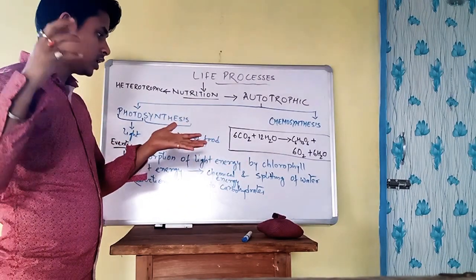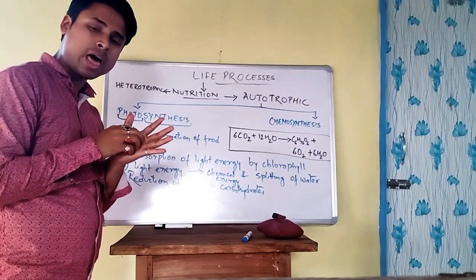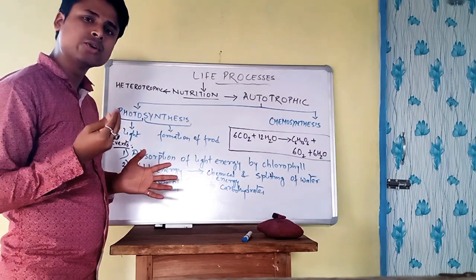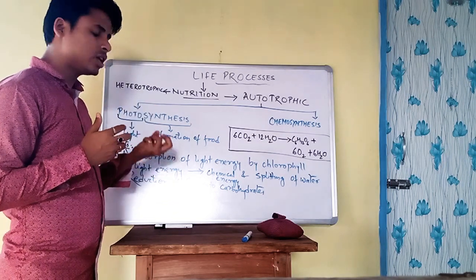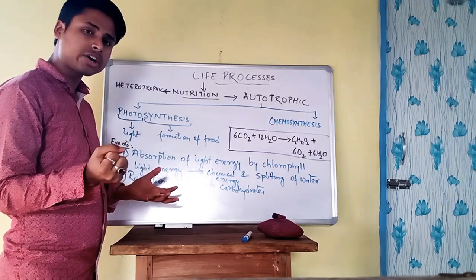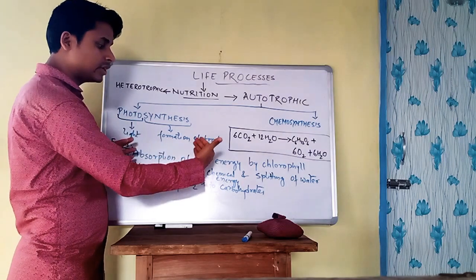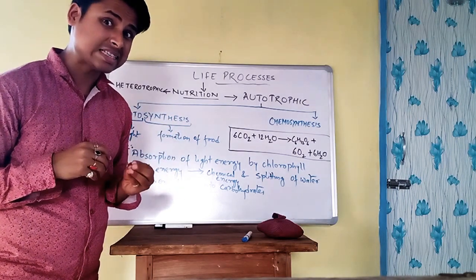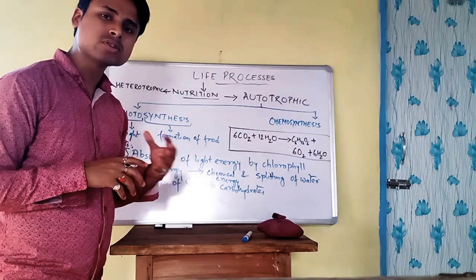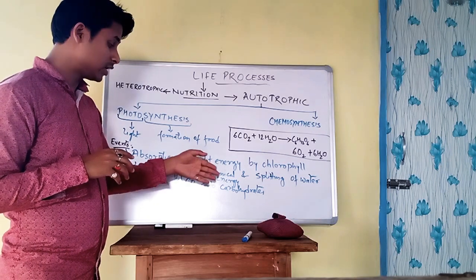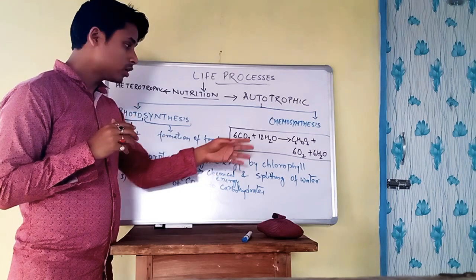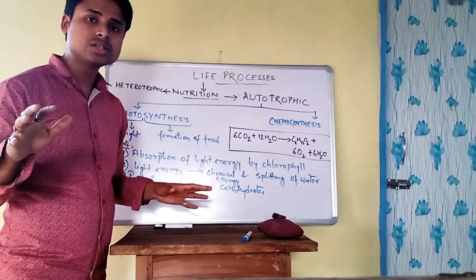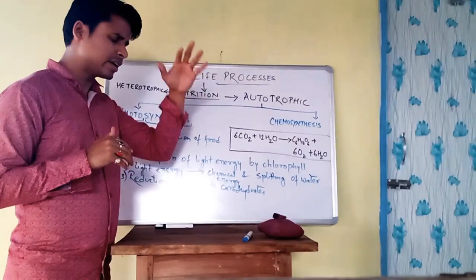Now it is very important to understand what events occur in photosynthesis. First, when light falls on the green part of the plant, chlorophyll traps the light energy — at about 680 to 700 nanometers wavelength. After trapping the light energy, this light energy is converted into chemical energy. The currency of energy is ATP — adenosine triphosphate — which is formed, so light energy converts to chemical energy in the form of ATP.